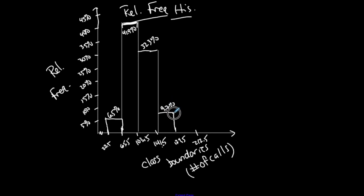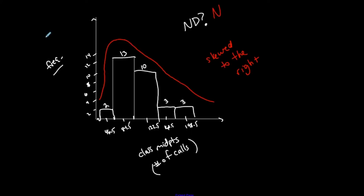And again, my graph is not perfect, right? Because they're supposed to be equal width for each of these bars. But the height represents the relative frequency. And if I say ND, is this graph normally distributed? I mean, it has the same shape as the other graph, doesn't it?